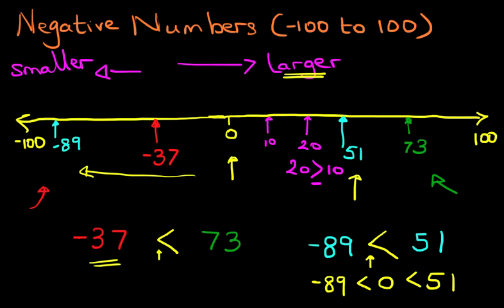But 0 is smaller than 51. There we go. There's 51. 0 is smaller than 51. Now, if you work on this principle and go through the 0 each time, you can't go wrong. So that is negative numbers from minus 100 to the positive number 100.